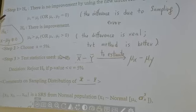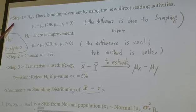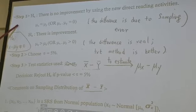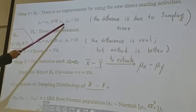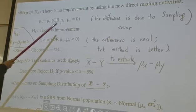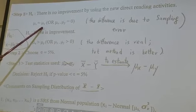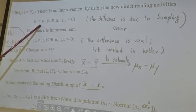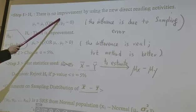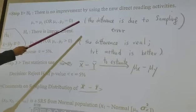We're going to do hypothesis testing. We're going to make inference on what? μx minus μy equal to zero. That means μx equal to μy. And what does that mean? That means there is no improvement by using the new direct reading activity.